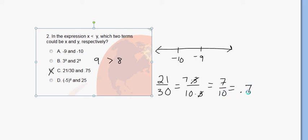Which we could write as 0.7. So if we look at 0.7 compared to 0.75, clearly 0.75 is larger. So we see that if x is 21 over 30 and y is 0.75, then x really is less than y.